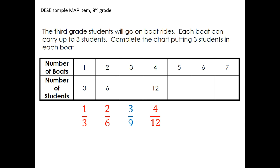So 3 to 9, 5 to 15, 6 to 18, or 7 to 21 would all be equal ratios to the ones that we were given.